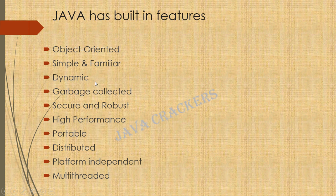In Java, everything is an object. Java can be easily extended since it is based on the object model. Object-oriented design simplifies software development and maintenance, and objects can be extended and changed easily. Java is simple and familiar because a developer who knows C and C++ can easily do coding in Java with just simple basics. Java is also dynamic — you can load new classes at runtime.